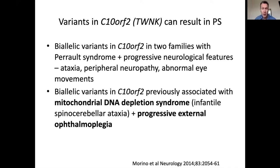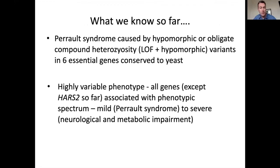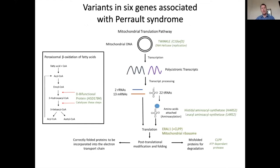Another gene was found subsequently — variants in TWNK, also known to cause progressive external ophthalmoplegia and mitochondrial DNA depletion syndrome, but in its mildest form appearing to cause Perrault syndrome. At this point we knew there are at least six different genes, highly conserved, that when carrying variants cause Perrault syndrome. It's a highly variable phenotype from very mild to much more severe childhood onset. All of those genes except HSD17B4 interact on the pathway of mitochondrial protein formation at different points.